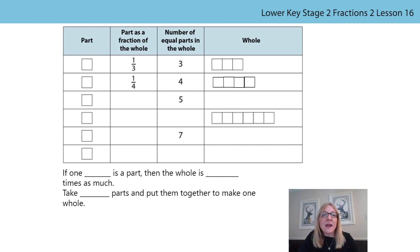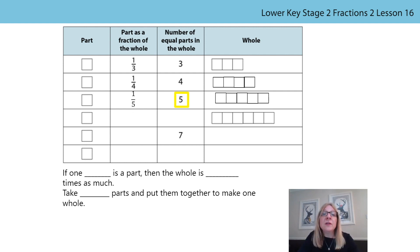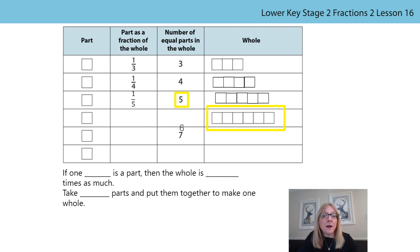My squares are in a line, but yours don't need to be, as long as there are four equal parts. Here we are told that there are five equal parts in the whole. We know then that each part is one fifth, and the whole can be represented by five equal squares. Here we can see from the picture that there are six equal parts.